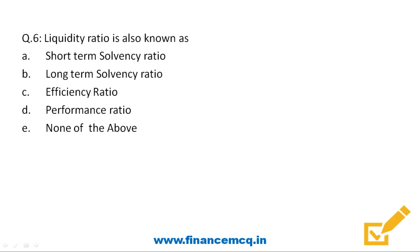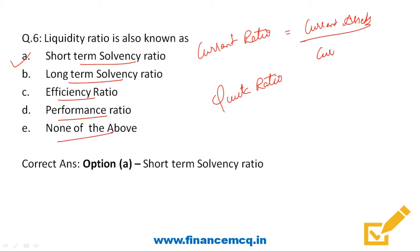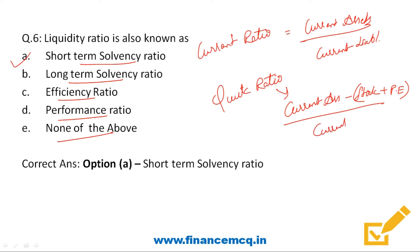Next question: liquidity ratio is also known as — short-term solvency ratio, long-term solvency ratio, efficiency ratio, or performance ratio? Liquidity ratio is also known as short-term solvency ratio. It is calculated using two ratios: current ratio and quick ratio, also known as acid test ratio. Current ratio is current assets upon current liabilities. Quick ratio excludes stock and prepaid expenses from current assets, divided by current liabilities. The ideal current ratio is 2:1, while the ideal quick ratio is 1:1.